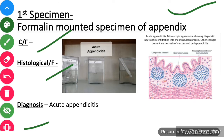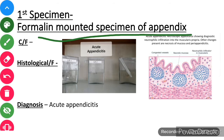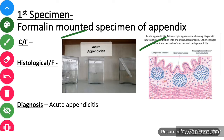First of all, when you write the name, you have to write 'formalin-mounted specimen of appendix.' This specimen of appendix is formalin-mounted. Formalin is basically a liquid which is used to preserve every biological specimen. So for every specimen, you have to write 'formalin-mounted specimen' in the name.